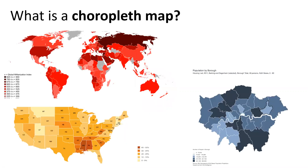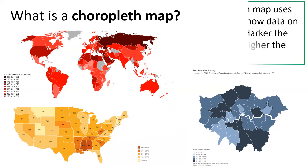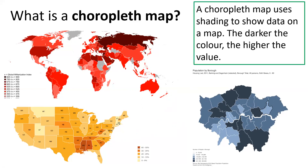Here we can see three different maps at three different scales. We've got a global map, the red one, a national map of the United States, and a much more local map showing London. They all have different colours, but they all have something in common. A choropleth map uses shading to show data on a map. For example, if we look at the map of London, the darker the shade the higher the value — the darker the blue, the more people live in that part of London.